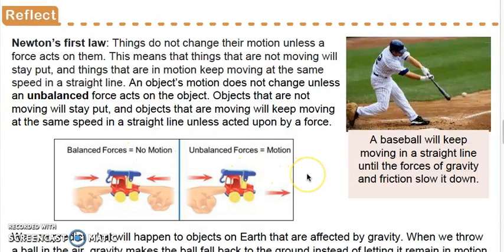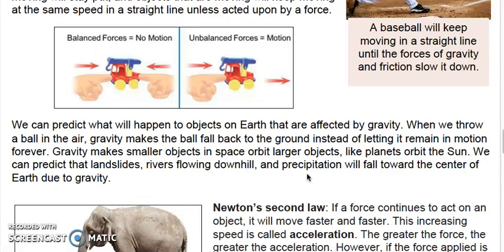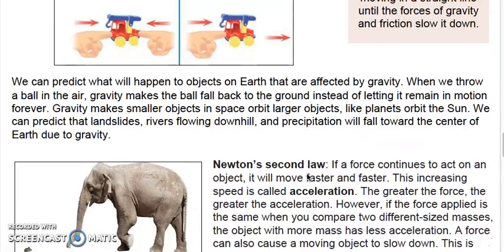We can predict what will happen to objects on Earth that are affected by gravity. When we throw a ball in the air, gravity makes the ball fall back to the ground instead of letting it remain in motion forever. Gravity makes small objects in space orbit larger objects, like planets orbit the sun. We can predict that landslides, rivers flowing downhill, and precipitation will fall toward the center of Earth due to gravity.